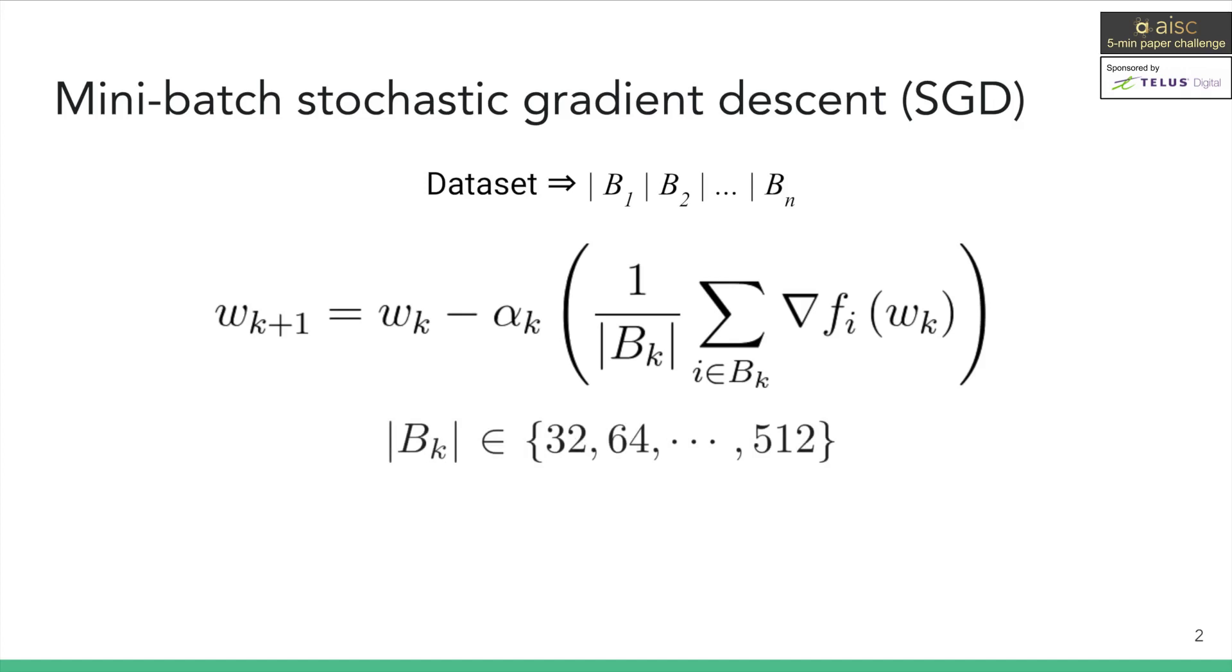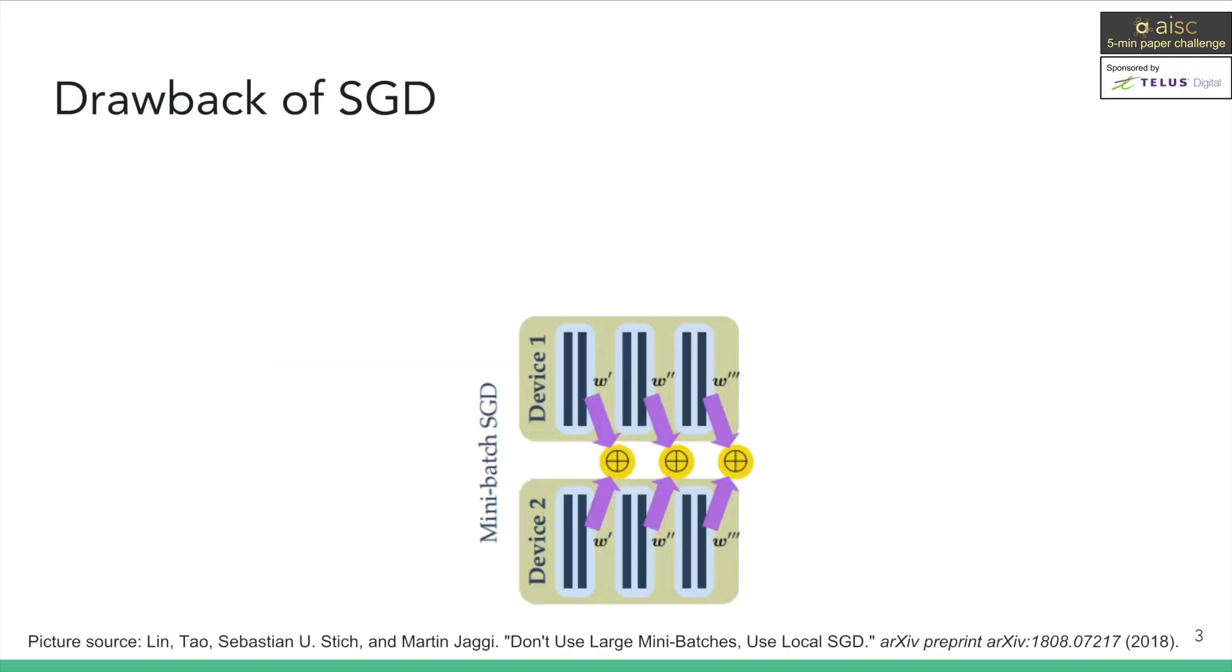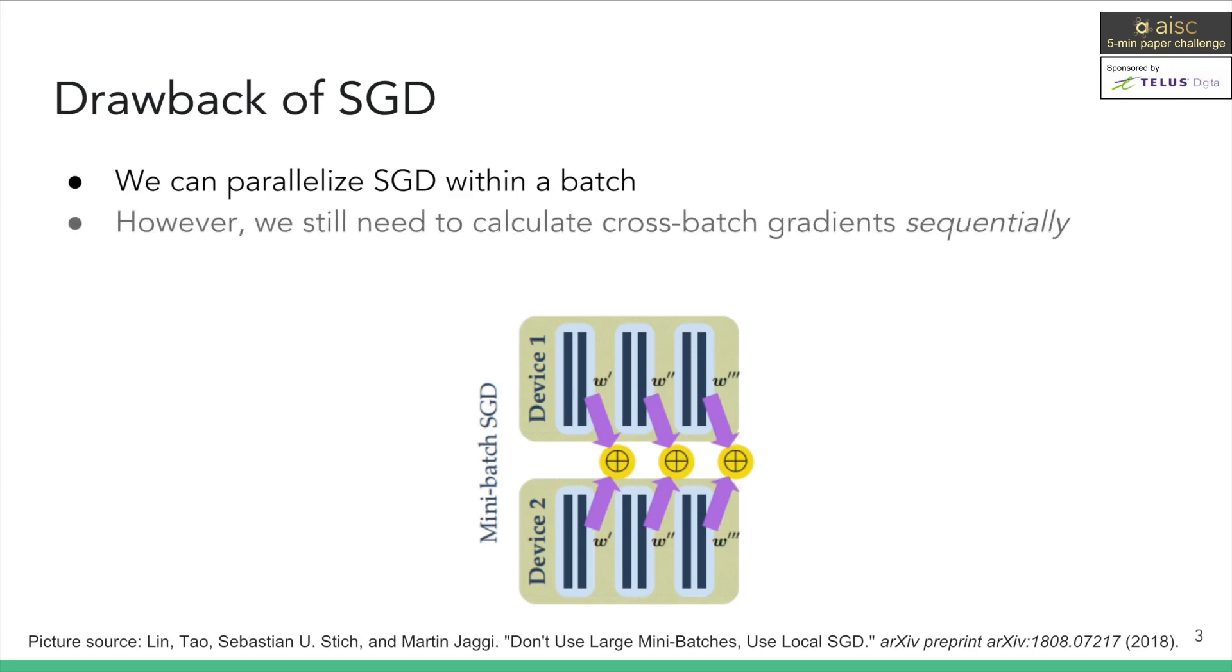Some of the common batch sizes of choice are 32, 64, 512, and so on. This means that our batch sizes are usually much smaller than the size of our dataset. Now, mini-batch SGD can be accelerated by distributing the computation of gradients into multiple processing units. However, due to the inherent sequential nature of SGD, such parallelization is only applicable within a single batch, but not across batches.